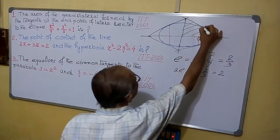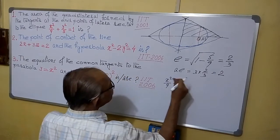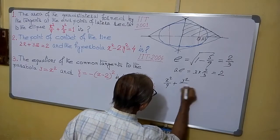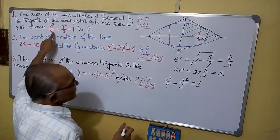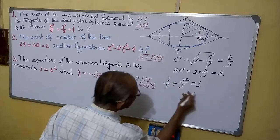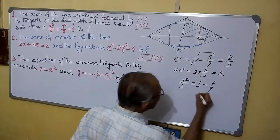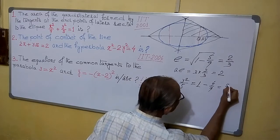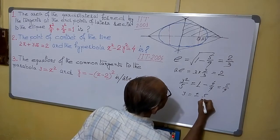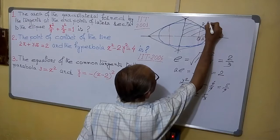We want to find the corresponding y-value at x = 2 on the ellipse. Substituting x = 2 into x²/9 + y²/5 = 1: we get 4/9, so y²/5 = 1 - 4/9 = 5/9. Therefore y² = 25/9, and y = ±5/3. So this point is (2, 5/3).